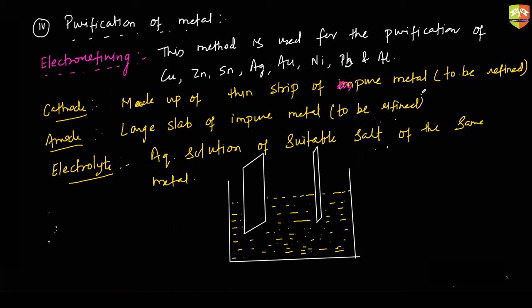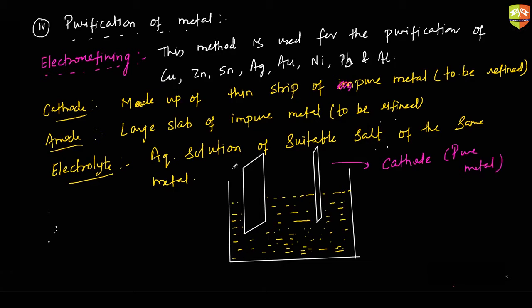So cathode is made up of pure metal, which is to be refined — it is a thin strip. The anode is the large slab, and it is made up of impure metal. This is the overall process and arrangement we have.